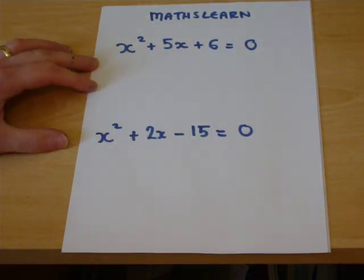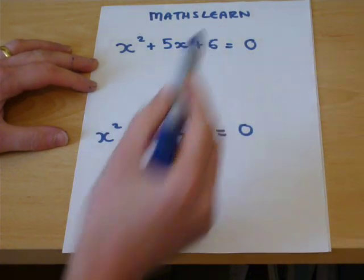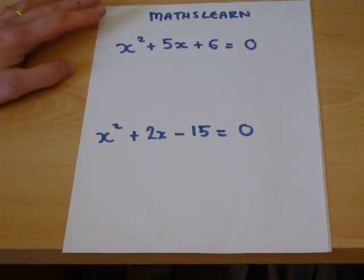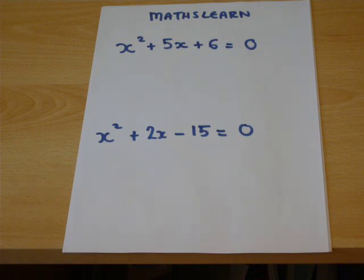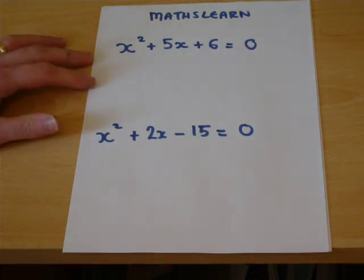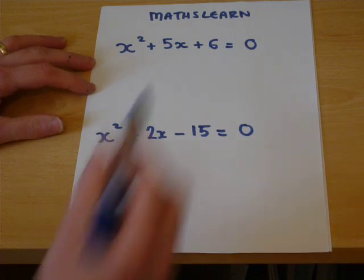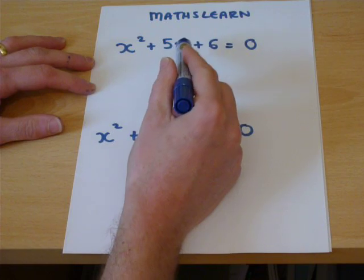Sometimes these expressions can be factorised and I suggest you might want to look at the video on factorising which I've also done, but basically we need two numbers which times to make plus 6 and add to make 5.